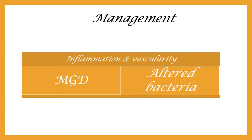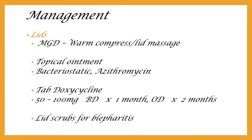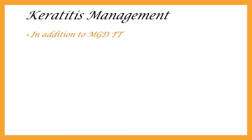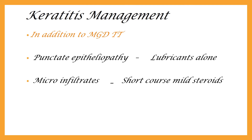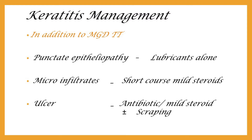Regarding management, we cannot change the body's tendency for inflammation and vascular changes. Our efforts are directed towards managing MGD and the bacterial overgrowth. This involves warm compresses, lid massage, and lid hygiene. Local bacteriostatic antibiotic ointments are given. In severe cases, oral doxycycline for 6–12 weeks is usually prescribed. For corneal pathology, lubricants are added in addition to meibomitis treatment. A short course of mild steroids is required for micro-infiltrates. For large ulcers, if they look sterile, we can go ahead with a steroid-antibiotic combination. But if we are not sure, it is always better to rule out secondary infection by taking scrapings first.